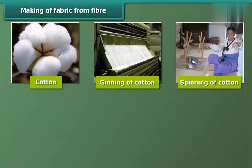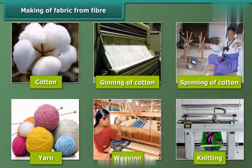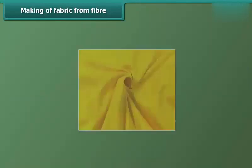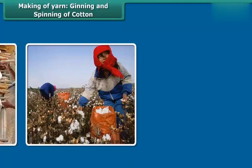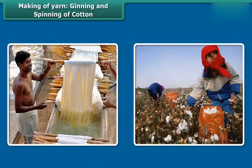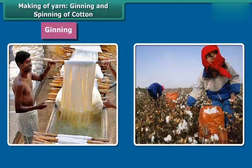How is fabric made from fiber? First, yarn is made from fiber and then fabric from yarn. To make yarn, cotton is picked by hand from cotton bolls, and then the fiber from the seeds is separated by combing — this is called ginning. Ginning can be done by machines too.